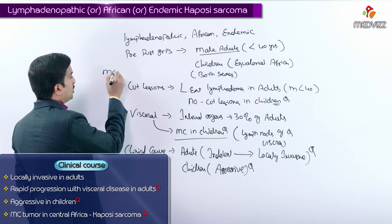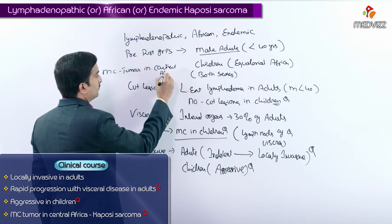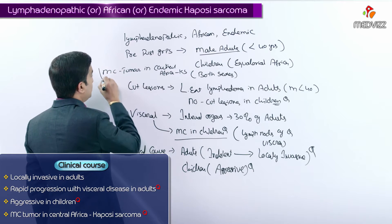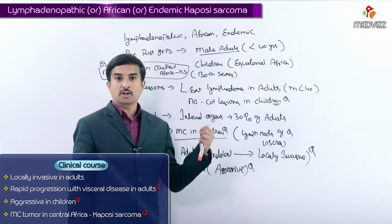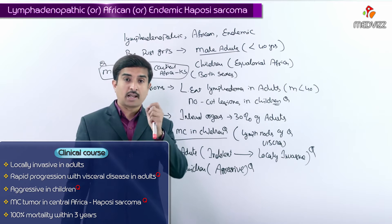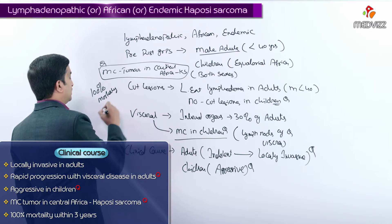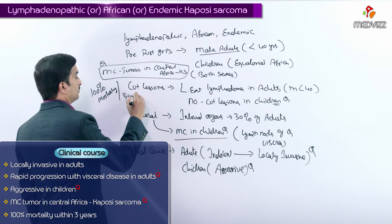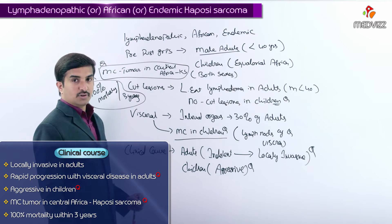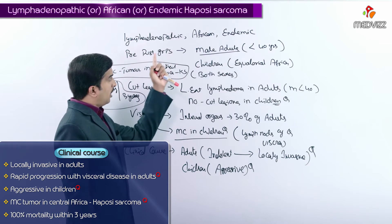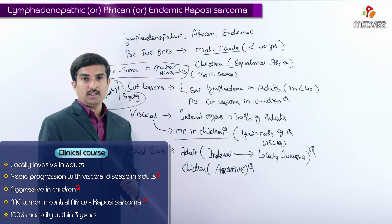Kaposi sarcoma is now considered to be the most common tumor in central Africa — this is an MCQ question. The answer is Kaposi sarcoma, with almost 100% mortality within 3 years. So the most common tumor in central Africa is Kaposi sarcoma, which is the lymphadenopathic, African or endemic type, with 100% mortality within 3 years.